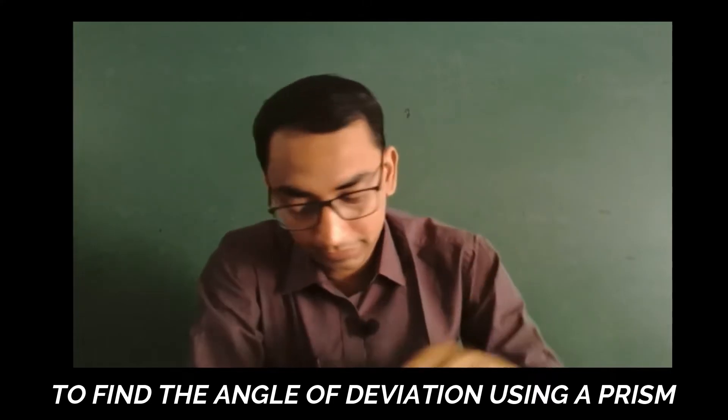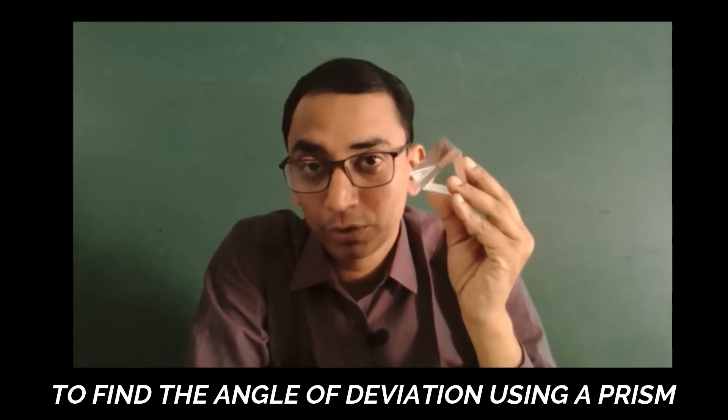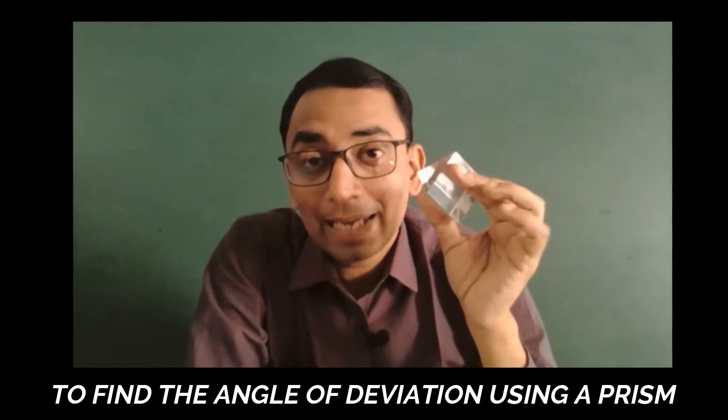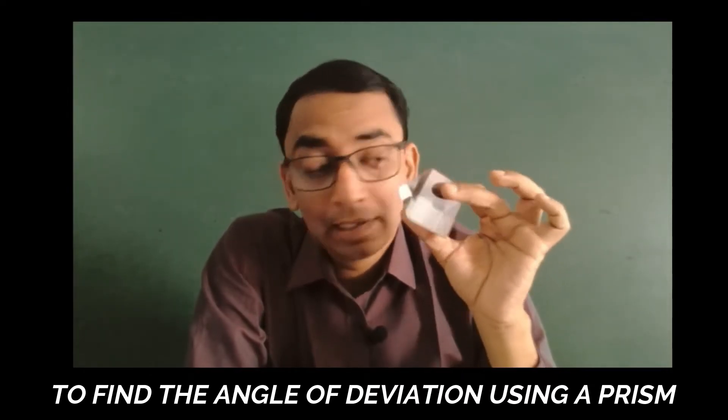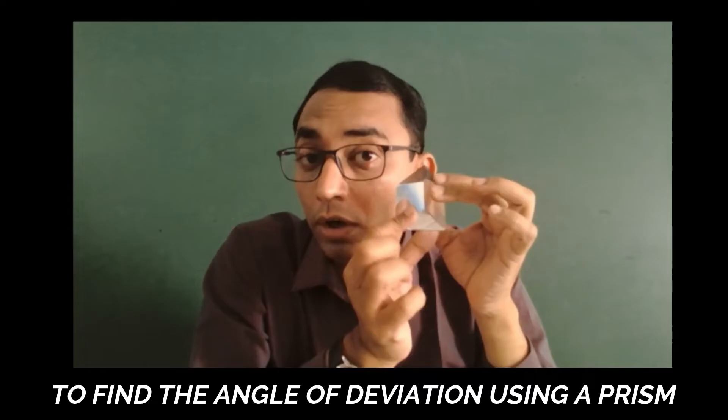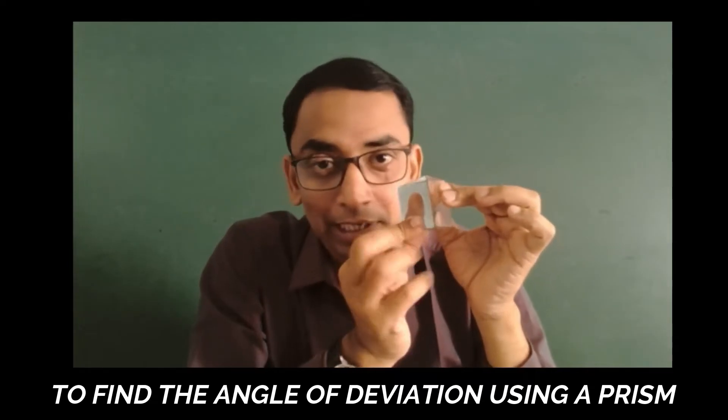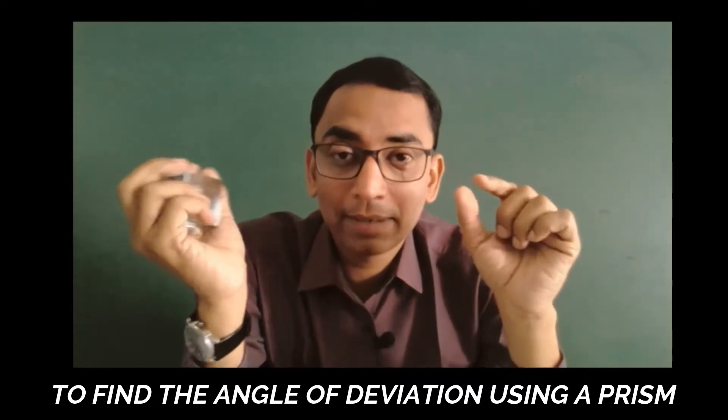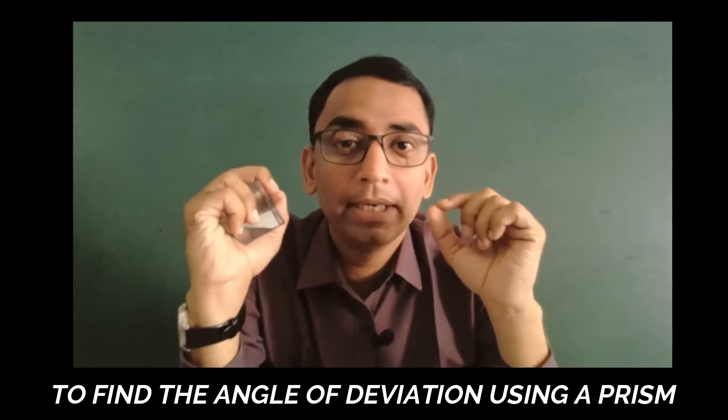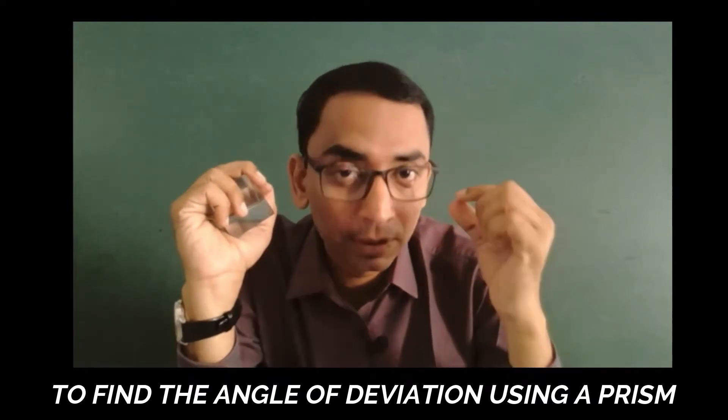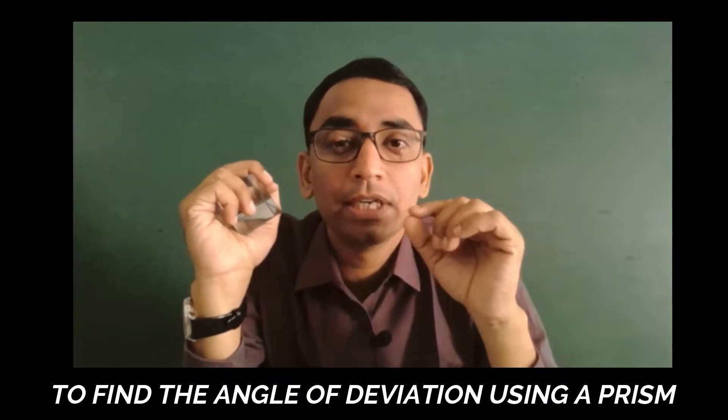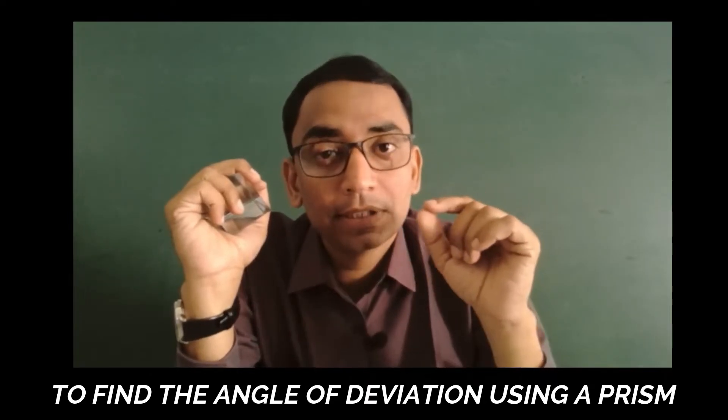Please note that this is a glass prism that we are going to use. And unlike the glass slab, angle of incidence will not be equal to the angle of emergence. It happens only in the glass slab. Many people have commented that I should be equal to E, but please understand that angle of incidence is equal to angle of emergence in case of glass slab, not in case of prism.